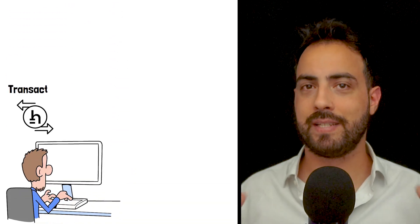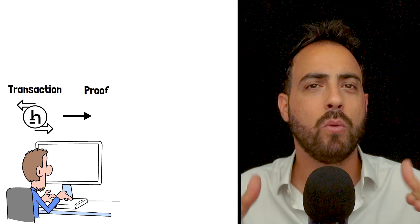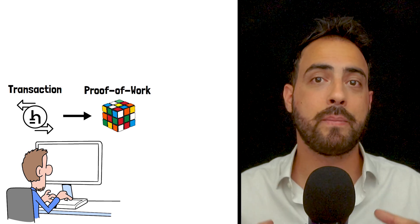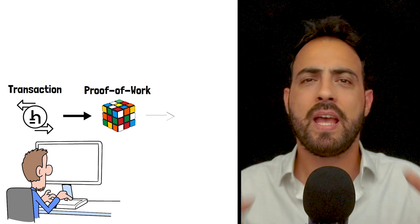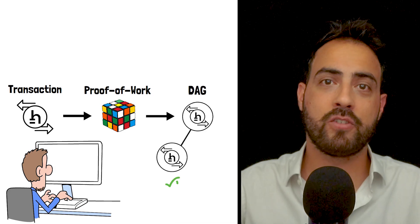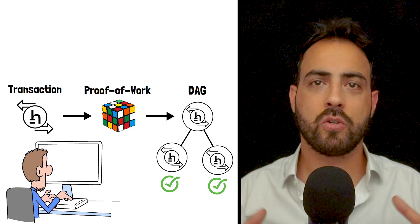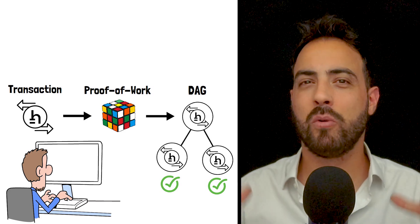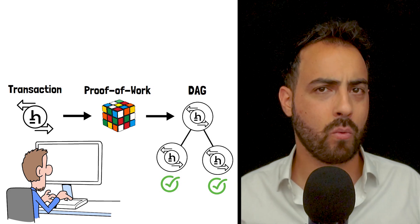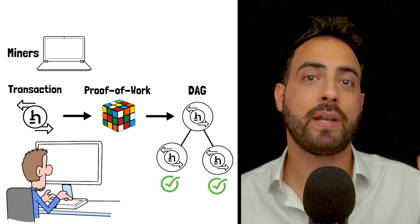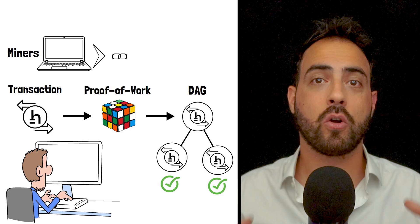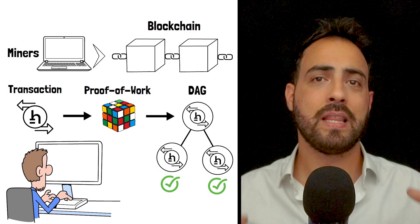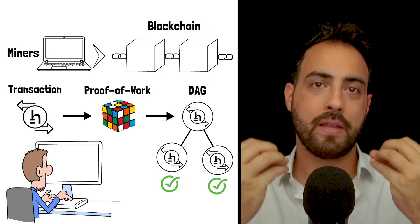When a user initiates a transaction, it first goes through a small proof-of-work process. This helps prevent spam and contributes to network security. The transaction then confirms two previous transactions in the DAG. This process continues, creating a web of confirmations that grows rapidly as more transactions are added. Meanwhile, miners are working to create new blocks. These blocks confirm one previous block and at least two transactions.